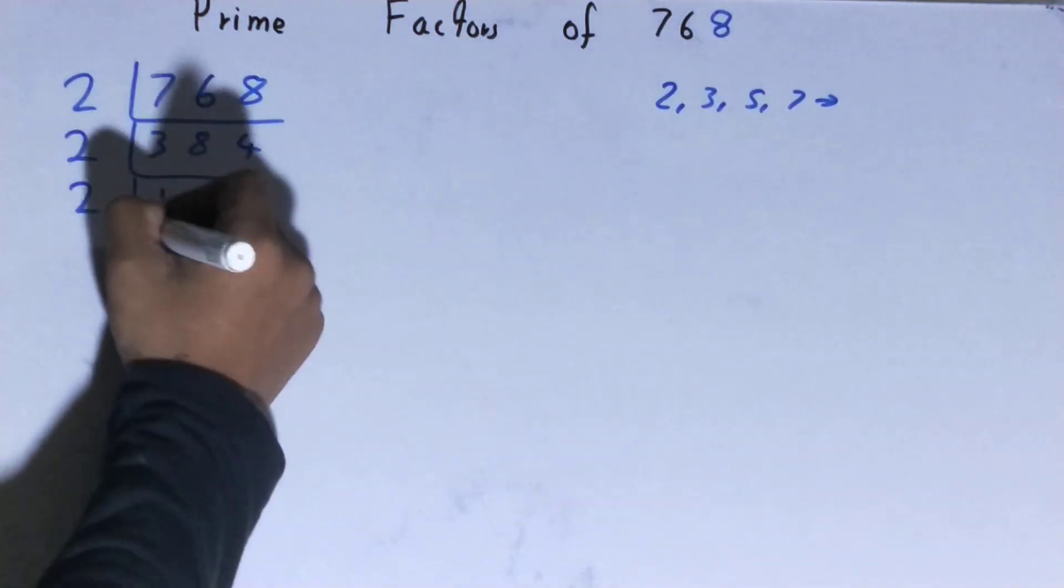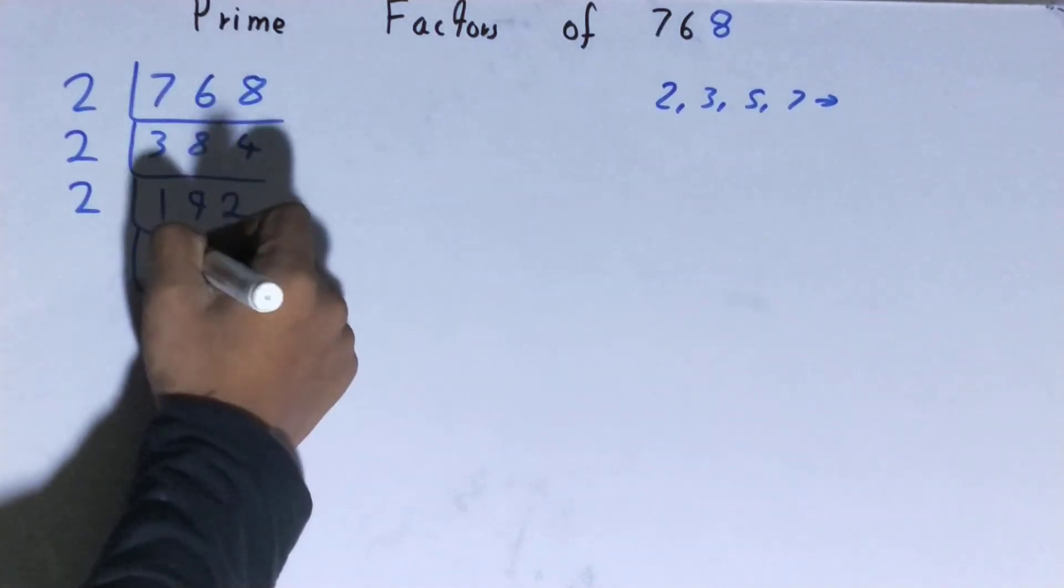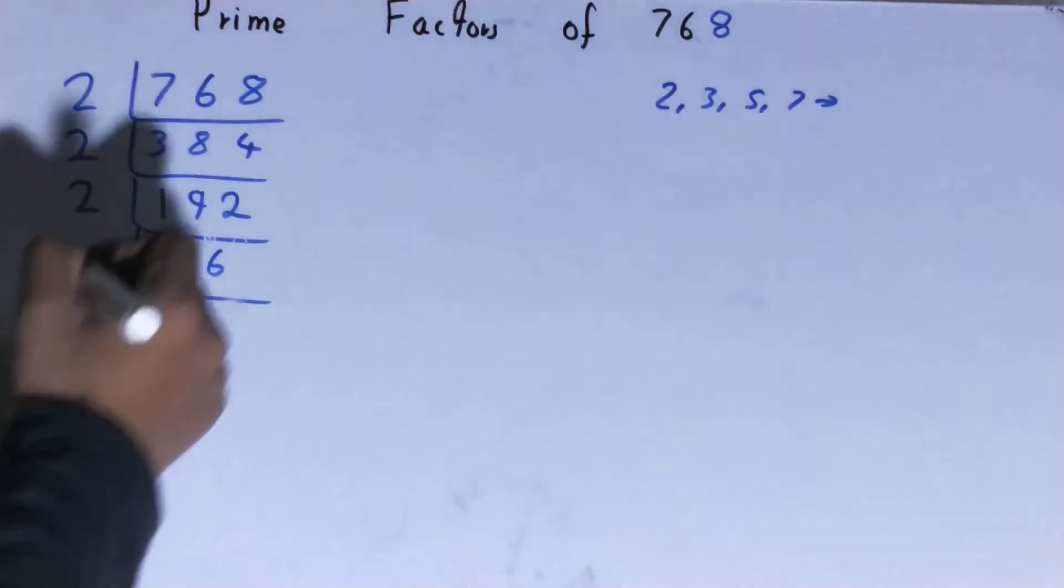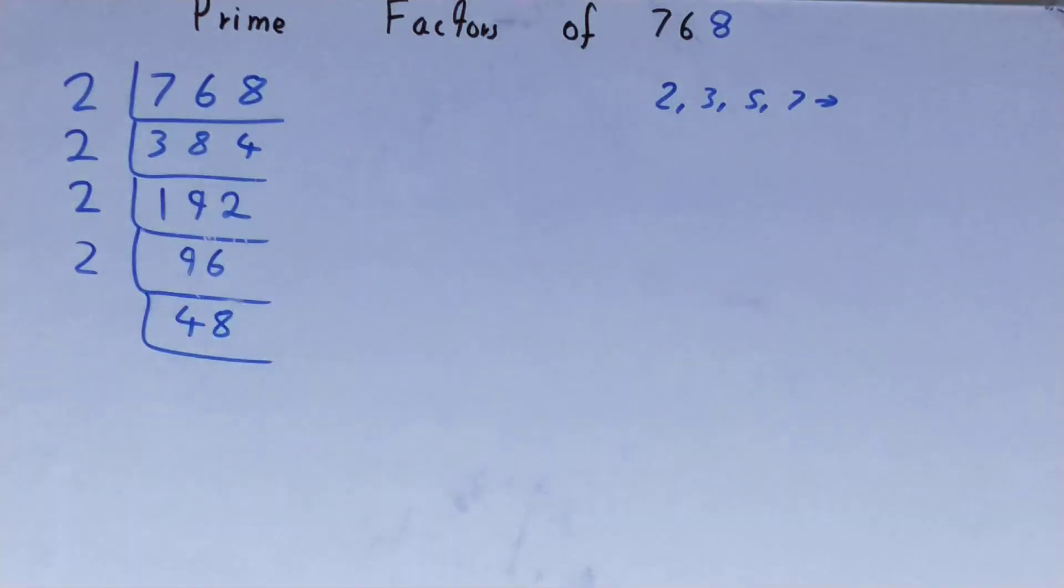Is 96 divisible by 2? Yes it is, so divide it and you'll be left with 48. And 48 is again divisible by 2, so divide it and you'll be left with 24.